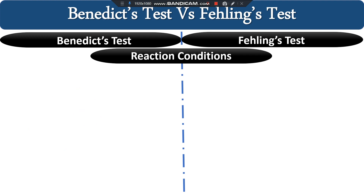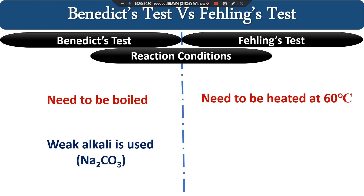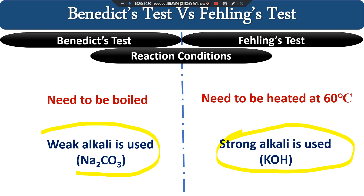Another difference is the reaction conditions. In the Benedict test we heat the reaction mixture up to boiling temperature, roughly 100°C, whereas in the Fehling test we only need to heat to about 60°C — you don't need to boil it. In the Benedict test we use sodium carbonate, a weak alkali, whereas in the Fehling test we use a strong alkali, KOH or sodium hydroxide. A drawback of the Fehling test is that this strong alkali KOH can degrade your carbohydrate, affecting the reaction so you may not get the expected result. In the Benedict test, the weak alkali does not degrade your carbohydrate, so there are no such drawbacks.